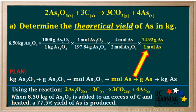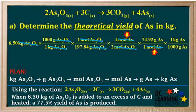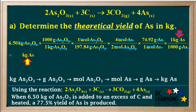In the next step, we convert moles of arsenic into grams by multiplying by its atomic mass, 74.92 grams to 1 mole. And in the last step, we convert grams of arsenic to kilograms by multiplying by 1 kilogram over 1000 grams. We can cancel the kilograms of As2O3, the grams of As2O3, the moles of As2O3, the moles of arsenic, and the grams of arsenic, and we're left with the unit kilograms of arsenic, which is the unit that we're asked for. We go 6.5 times 1000 divided by 197.84 times 4 divided by 2 times 74.92 divided by 1000, and we get 4.92 kilograms of arsenic as the theoretical yield.